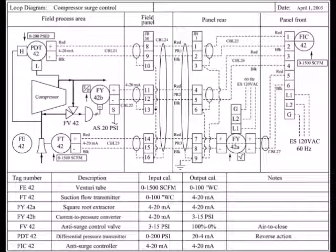Here we see the instrument loop diagram and it shows how devices are connected from the field to the PLC panel. This example, the compressor surge control, and from left to right we can see the field processes, the field panel, the panel rear and the panel front.